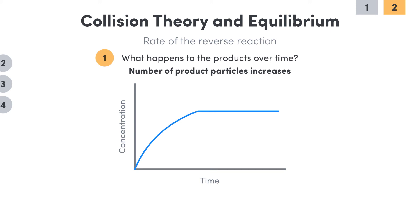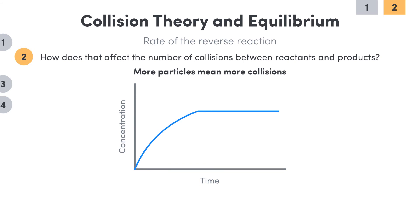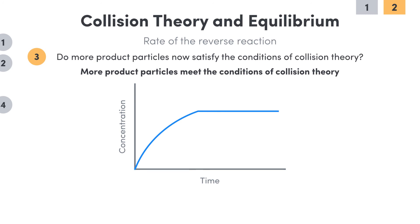That, in turn, increases the number of collisions occurring between the product particles. Once more, this doesn't directly affect the energy or orientation of any of these particles, so any given collision between the products isn't any more likely to result in the reverse reaction.